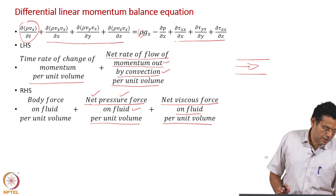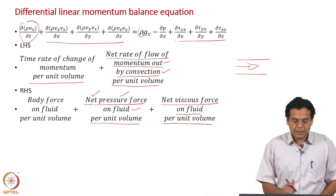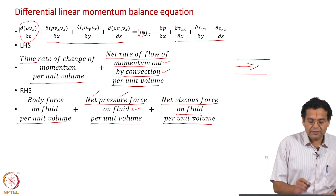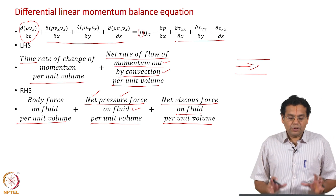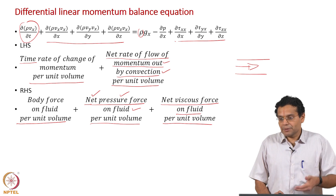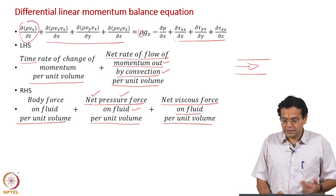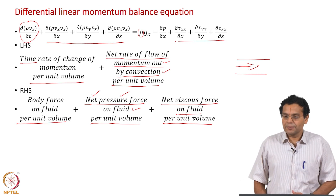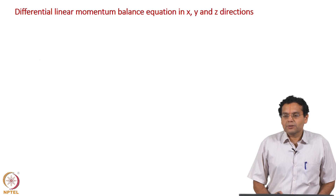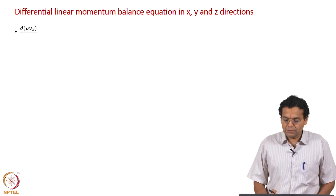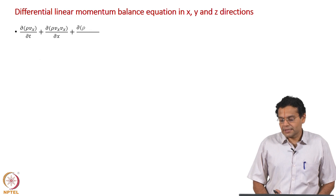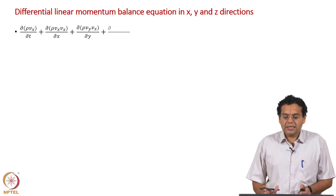So this is a precise way of writing the significance of each term in the linear momentum balance: all are per unit volume. Left hand side: time rate of change of x momentum per unit volume, and net rate of flow of x momentum out by convection per unit volume. Right hand side: body force on fluid per unit volume, net pressure force on fluid per unit volume, net viscous force on fluid per unit volume. We can extend all this to all three directions — the three equations along x, y, and z together constitute the differential linear momentum balance equation.